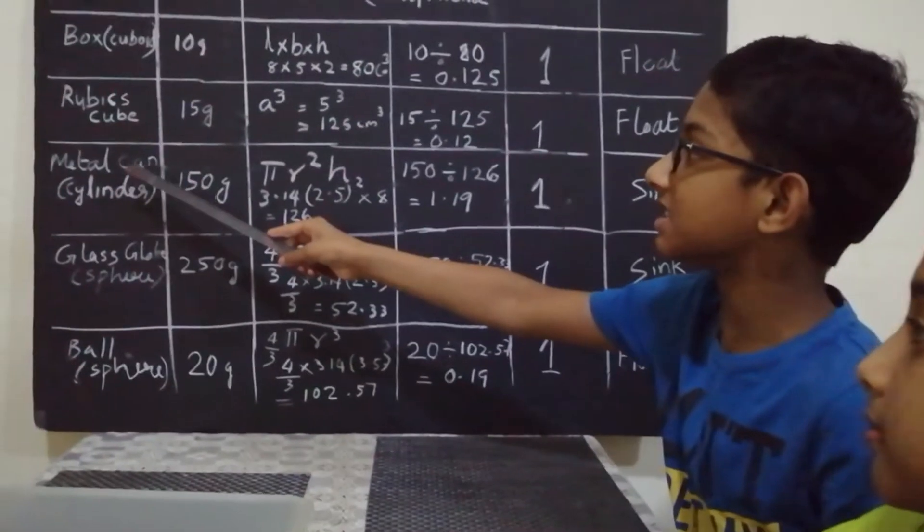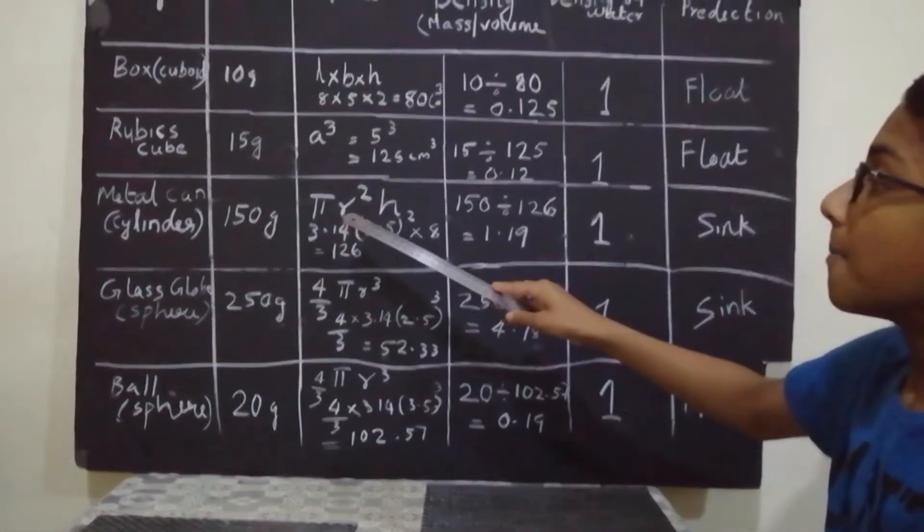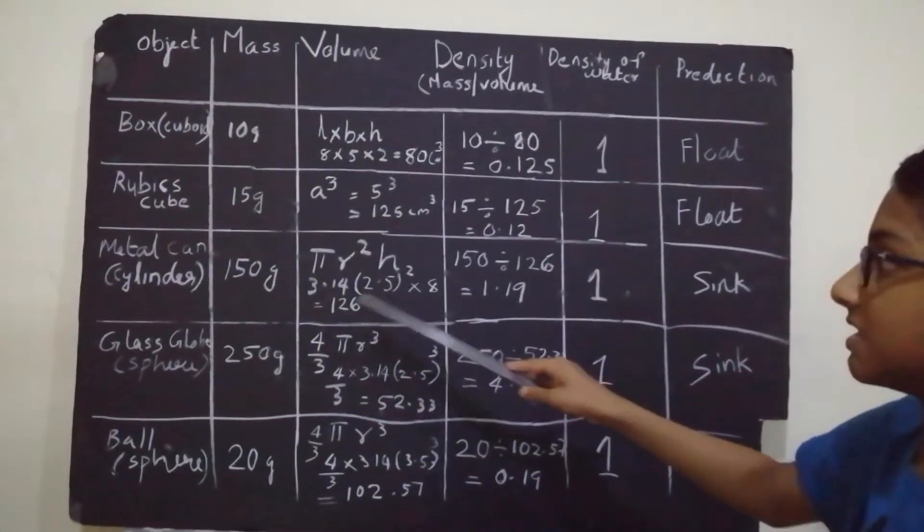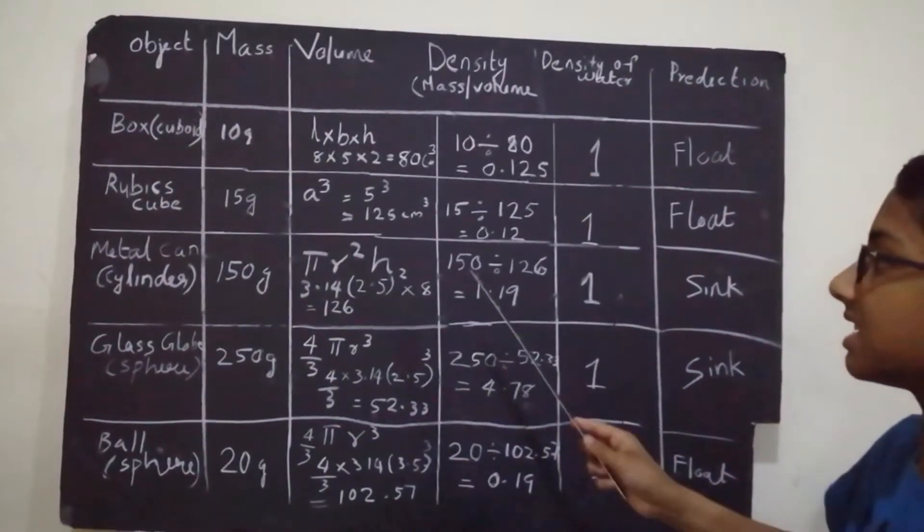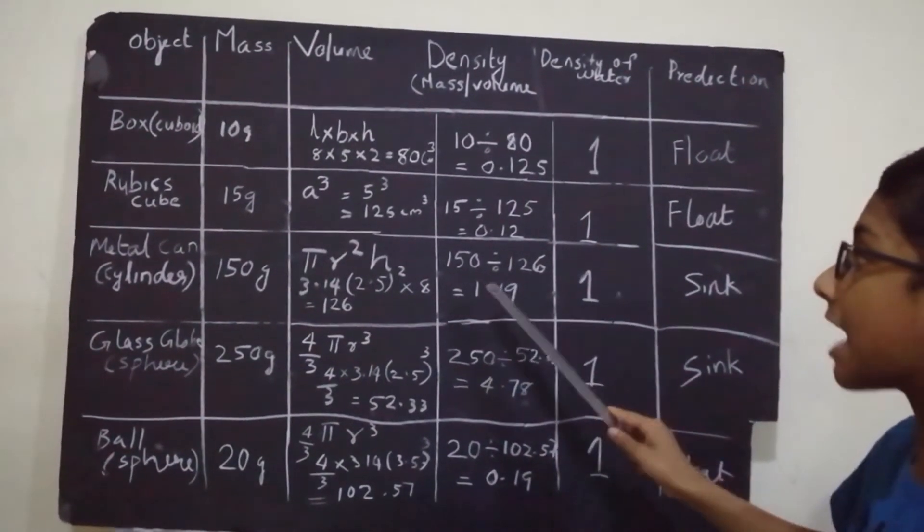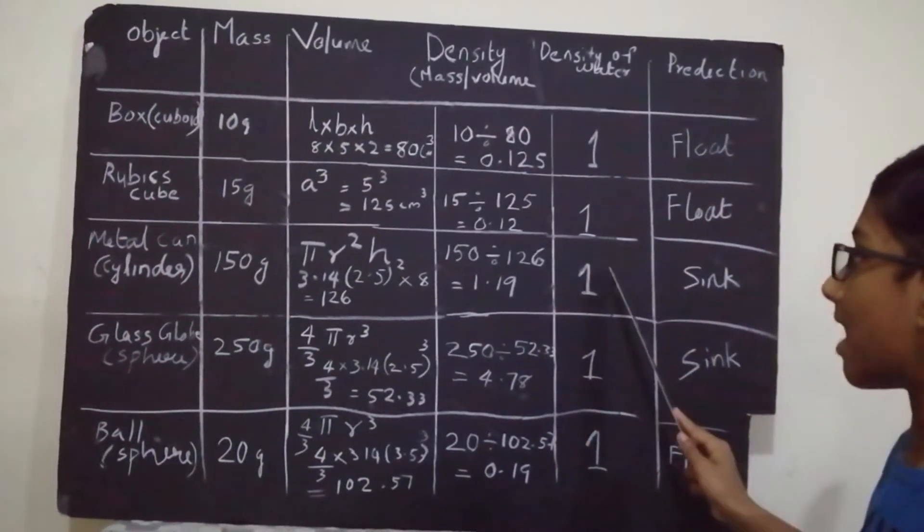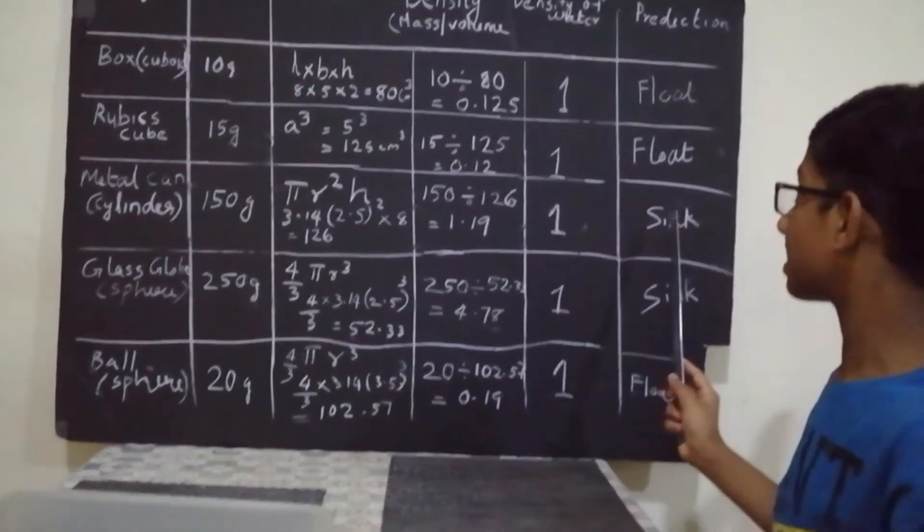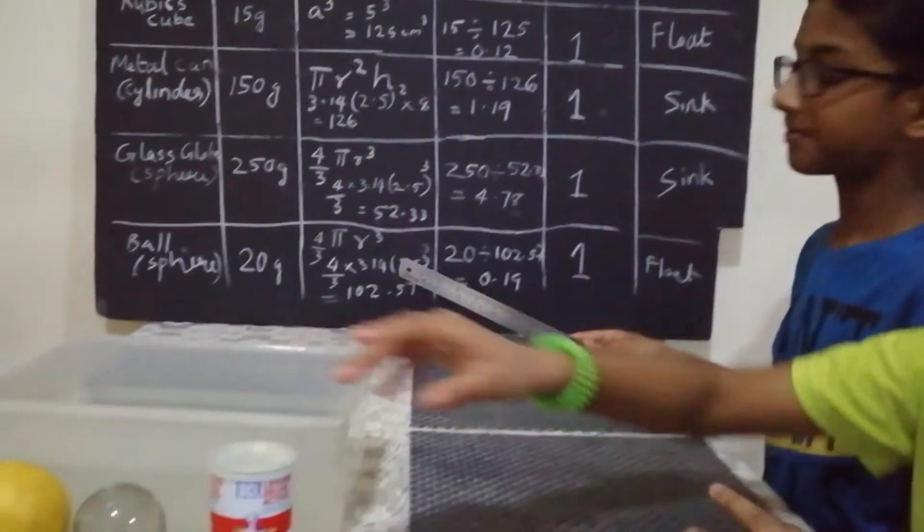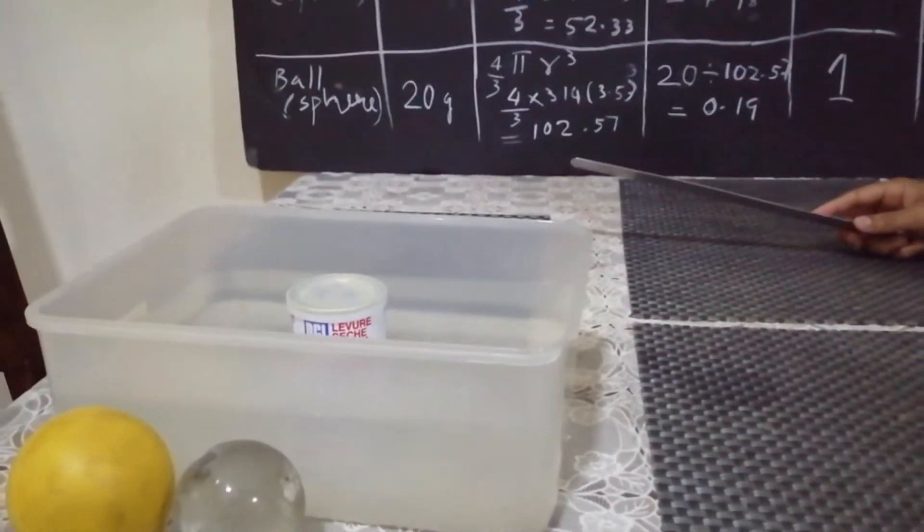Next, a cylindrical can. The equation for it is pi r square h which equals 126. Then, for finding the density, it equals 1.19, which is more than the density of water 1. So it will sink in water. Now, let us check if it is true or not. Can. Yes, it is sinking.